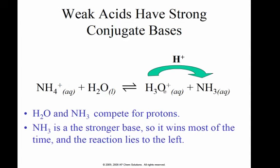In this particular case, ammonia and water are competing for the protons, so they're the bases. Ammonia is the stronger of the two, so it wins most of the time, and therefore this reaction lies to the left. This will get a hydrogen and produce this and this.